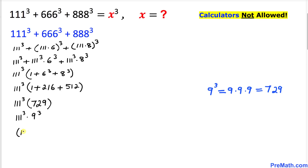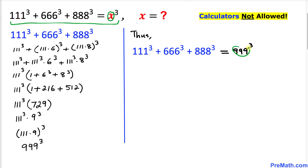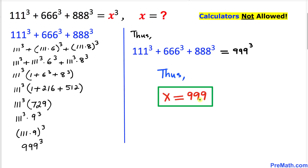So we have 111 power 3 times 9 power 3, which in turn could be written as 111 times 9, whole power 3. Now 111 times 9 is the same as 999, and then power 3. So thus we can see that 111 power 3 plus 666 power 3 plus 888 power 3 turns out to be equal to 999 power 3. Comparing with the original equation, x equals 999. Thanks for watching and please don't forget to subscribe to my channel for more exciting videos. Bye.